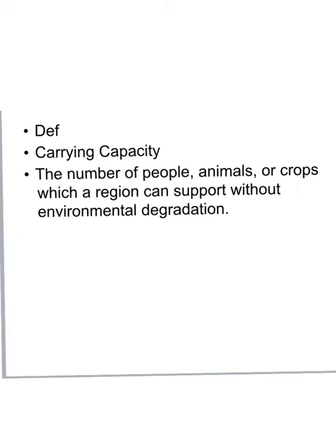An important new term is carrying capacity. It's the number of people, animals, crops or plants — or a population of a species — which a region can support without environmental degradation. Obviously this applies to an area: if rabbits ate all the grass and food in an area, that area would no longer be able to support them and would exceed the carrying capacity. Most animals that can move would then migrate to a different area to get more food. Carrying capacity applies to a region, an environment, a habitat, a place, an island, or some fixed area.